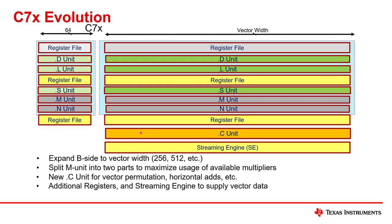The C unit is new with C7000. It's for vector permutation — this is where elements inside of a vector are moved around. A horizontal add is where you add up all the elements of a vector yielding a single value, and other operations like that within a vector. That's what happens on the C unit.